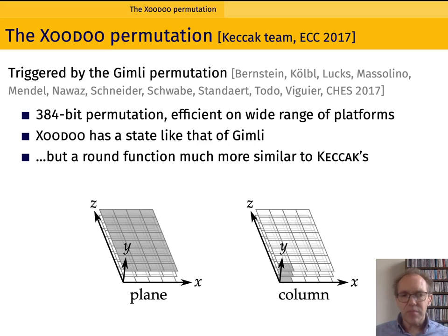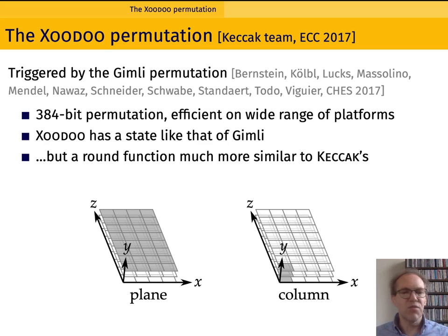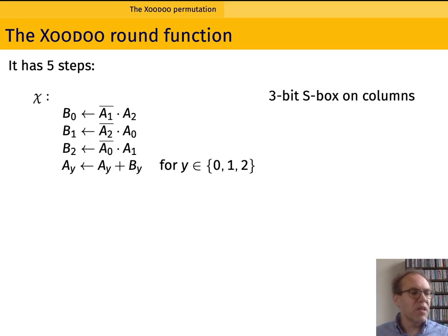Looking at the state of Zoodoo, it consists of three so-called planes — parallel horizontal planes — where each plane is a rectangular array of 4 by 32 bits. You can also see it as a rectangular array of columns, where each column consists of three bits, one from each plane. The Zoodoo round function operates on this state and has five steps. The non-linear step is G, the same G found in Keccak-F or Subterranean, operating on three-bit columns — essentially the parallel application of three-bit S-boxes on 128 columns.